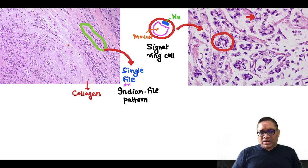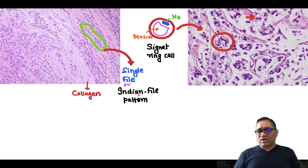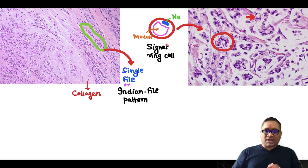You can notice the collagenous stroma is surrounding the tumor cells. These are all collagenous stroma, and tumor cells are infiltrating in a single file or Indian file pattern.